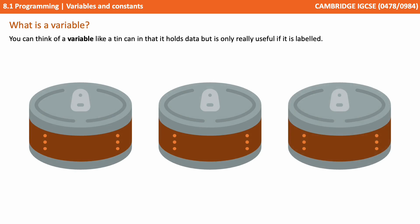You can think of variables a bit like a set of tin cans. The cans hold data, but they're only helpful if they're labelled. Here we have three cans labelled first name, age, and date of birth.